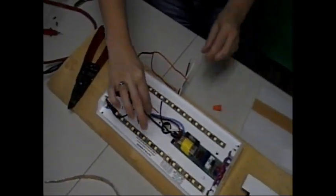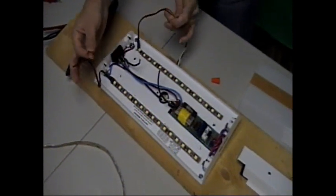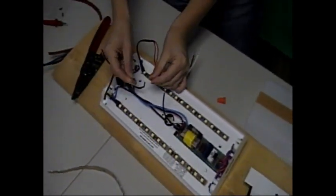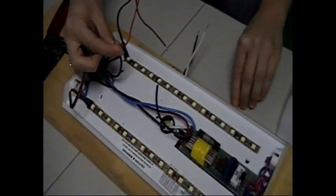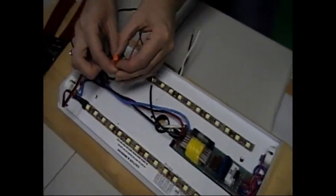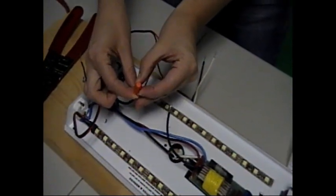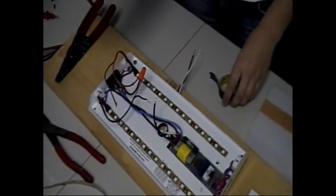The next step is to take the two positive wires from your LED strips and bring them together with the wire we just stripped, and then cap them with a wire nut or a butt connector.